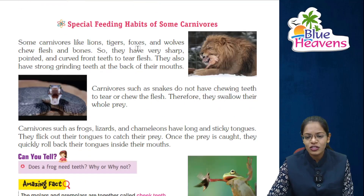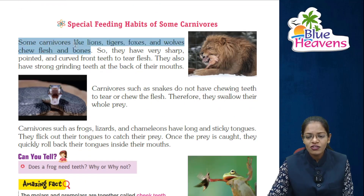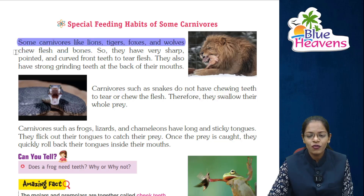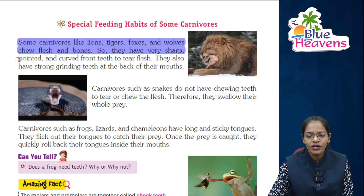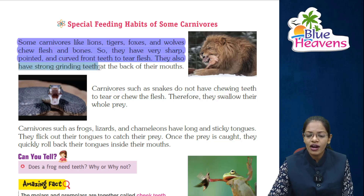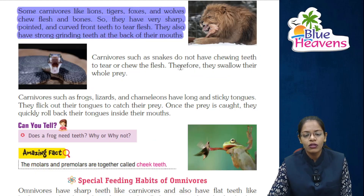Next: special feeding habits of some carnivores. Some carnivores like lions, tigers, foxes, and wolves eat flesh and bones. So they have very sharp, pointed, and curved front teeth to tear flesh. They also have strong grinding teeth at the back of their mouth.